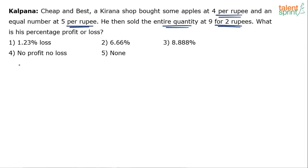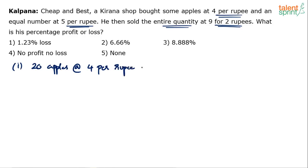Look at Case 1 now. He has bought 4 per rupee — 20 apples total at 4 per rupee. So what's the total cost price C1? You are buying 4 apples per rupee and you've bought 20 apples. So if it is 4 for 1 rupee, for 20 apples it will be 20 by 4, which means 5 rupees. So you have spent 5 rupees in buying 20 apples.